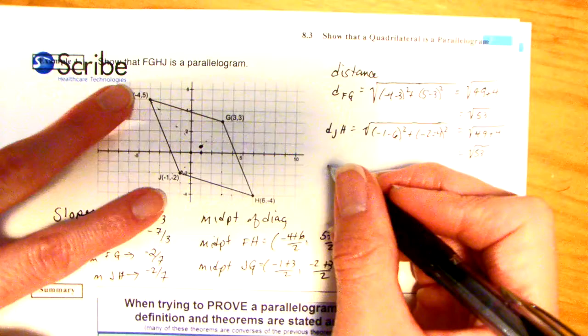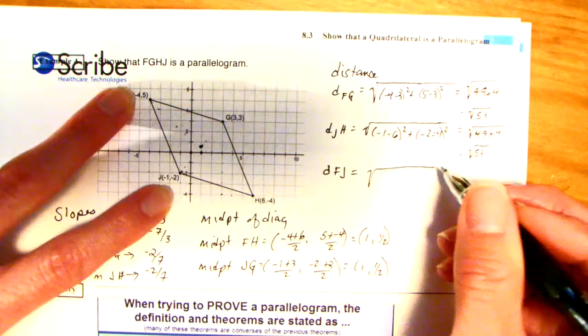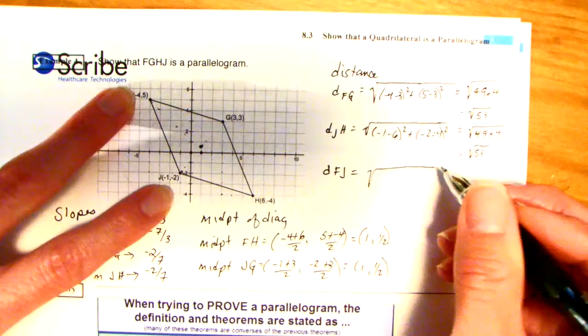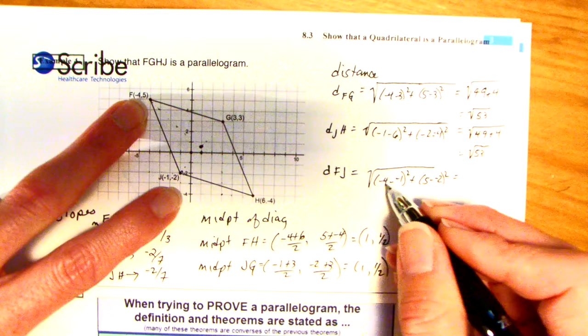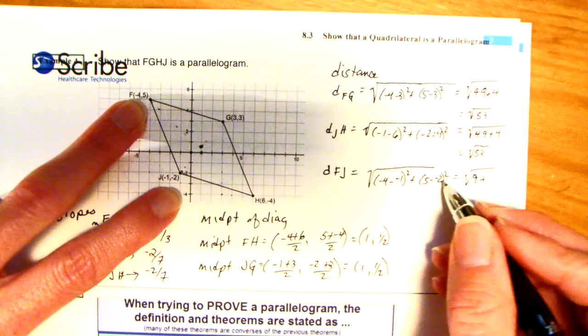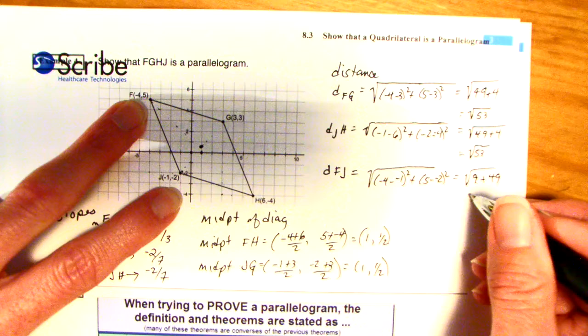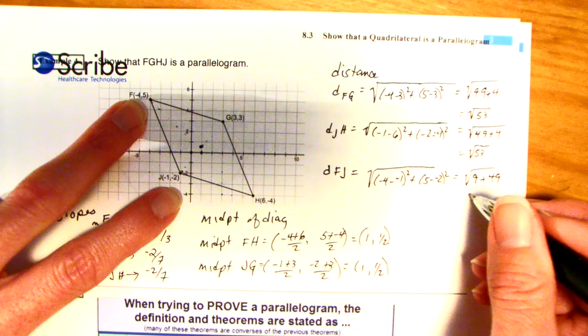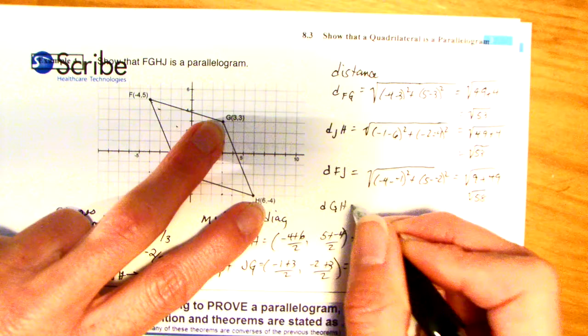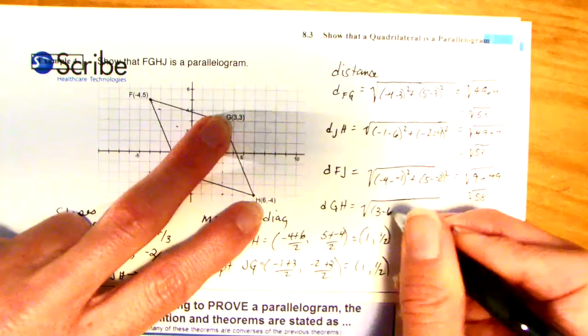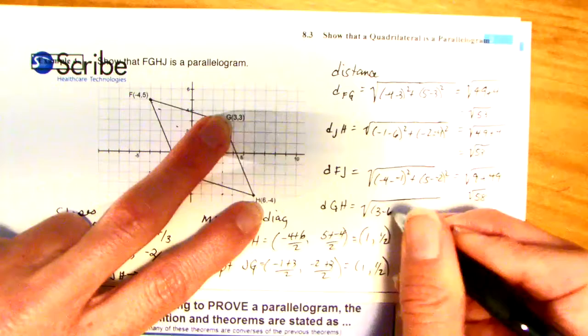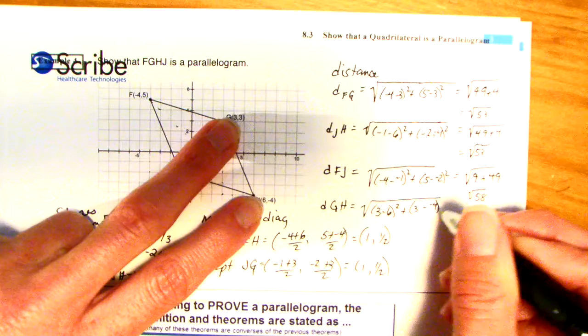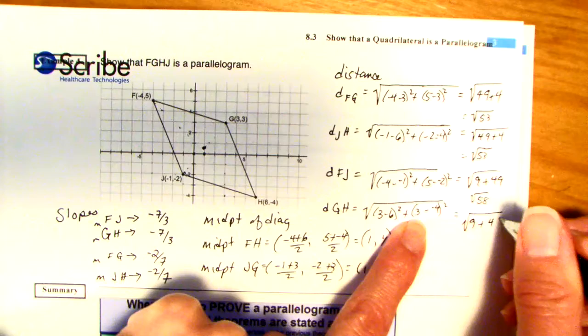Now, let's do these two sides. Distance of FJ. Negative 4 minus a negative 1 squared plus 5 minus a negative 2 squared. So, this is going to be a negative 3 squared, which is 9. And this is going to be 7 squared, which is 49. 9 plus 49 is 58. And last but not least, we're running out of space. Distance of GH. The difference of 3 minus 6 squared plus 3 minus a negative 4 squared. 3 minus 6 is a 3 squared. You get 9. Negative negative is a positive. 3 plus 4 is 7 squared. You get 49. Yep. Same thing.